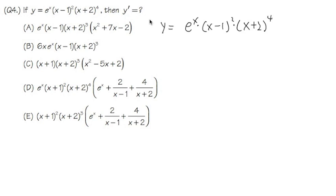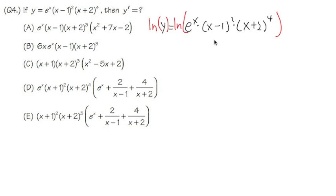The algebra we're going to do is take ln on both sides: ln y, and then ln of the right-hand side. The reason is because whenever we take ln of a product, it will become a sum. So on the right-hand side, it's going to be the sum of three different lns rather than three different products. So we can avoid using the product rule.